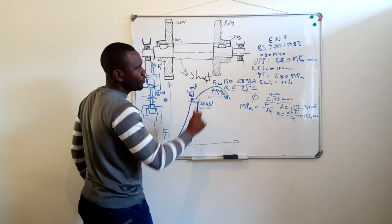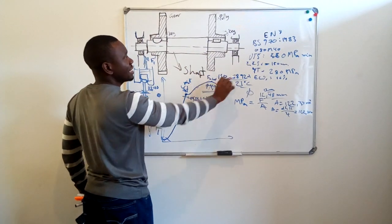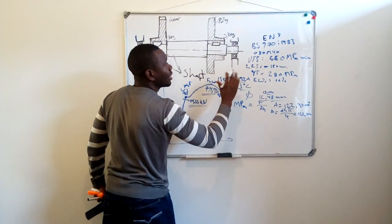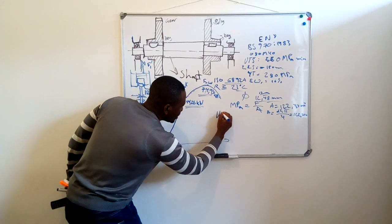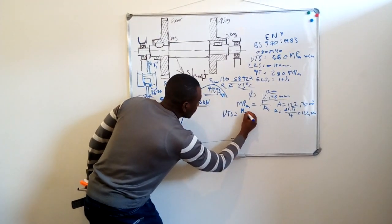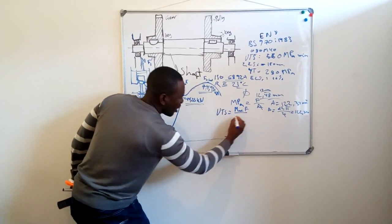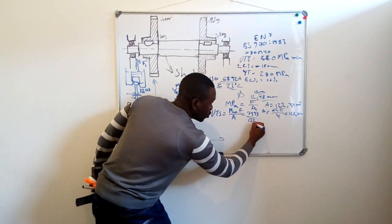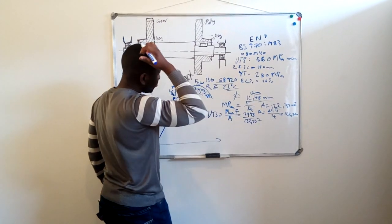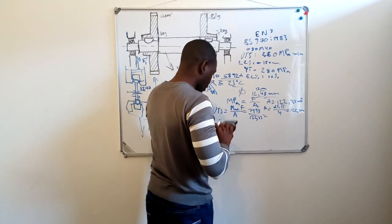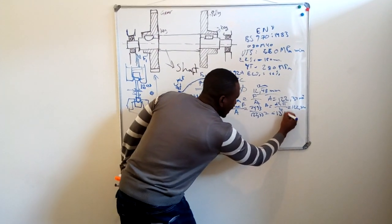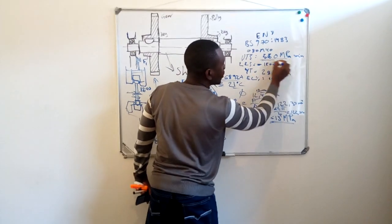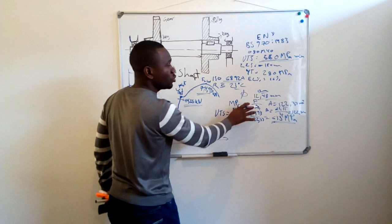If you have to get the UTS to confirm that this material is the same as what it says EN8, you take the maximum force, because UTS is ultimate tensile strength, the most high tensile strength. So UTS equals to maximum load over the area. What I'm having here is 74.93 over 122.33 millimeters, and then I'm getting 613 MPa. So this one here is above the minimum, which means the material in terms of the UTS is okay.